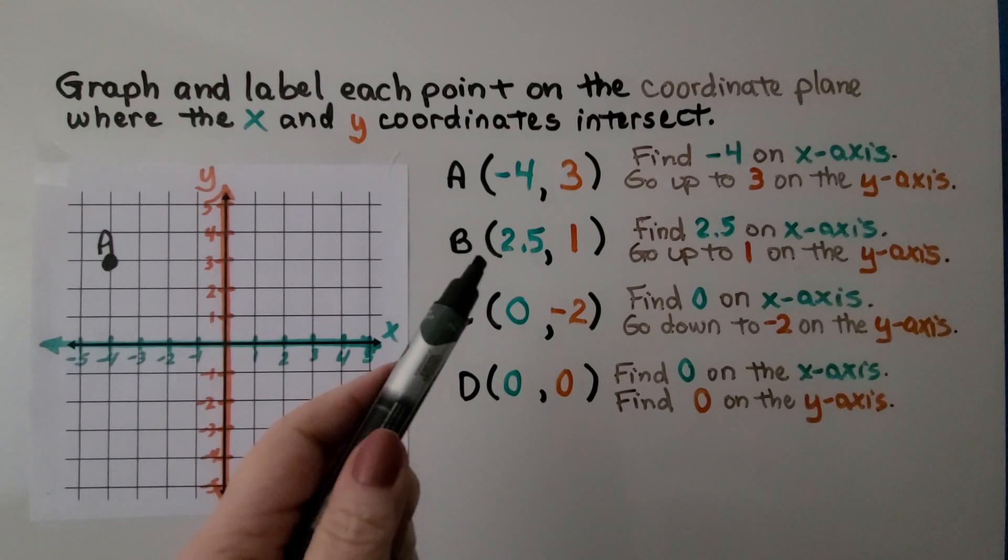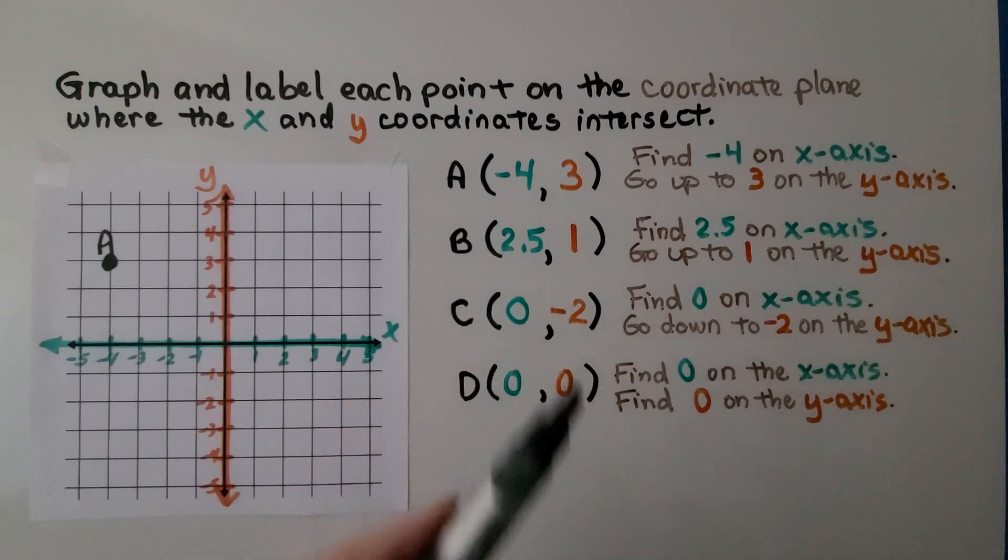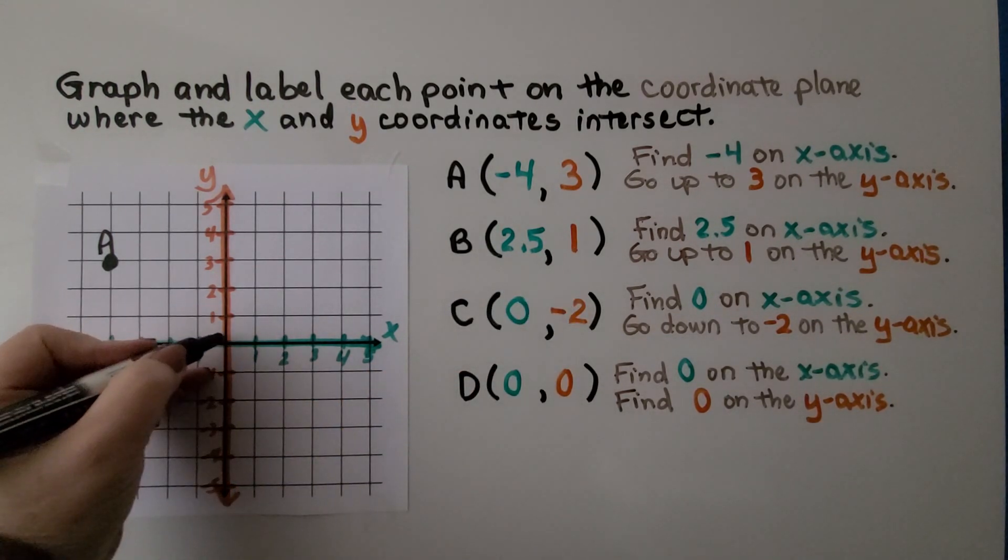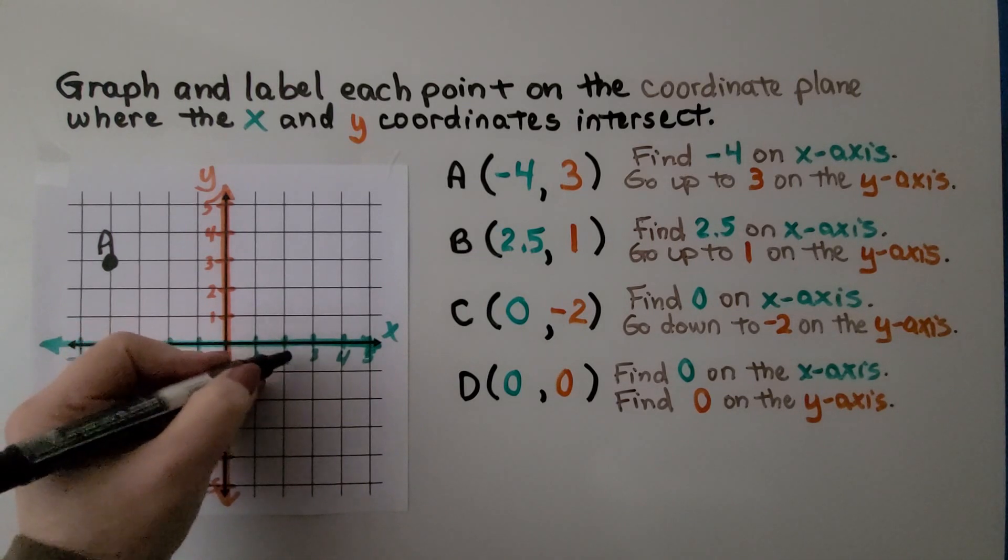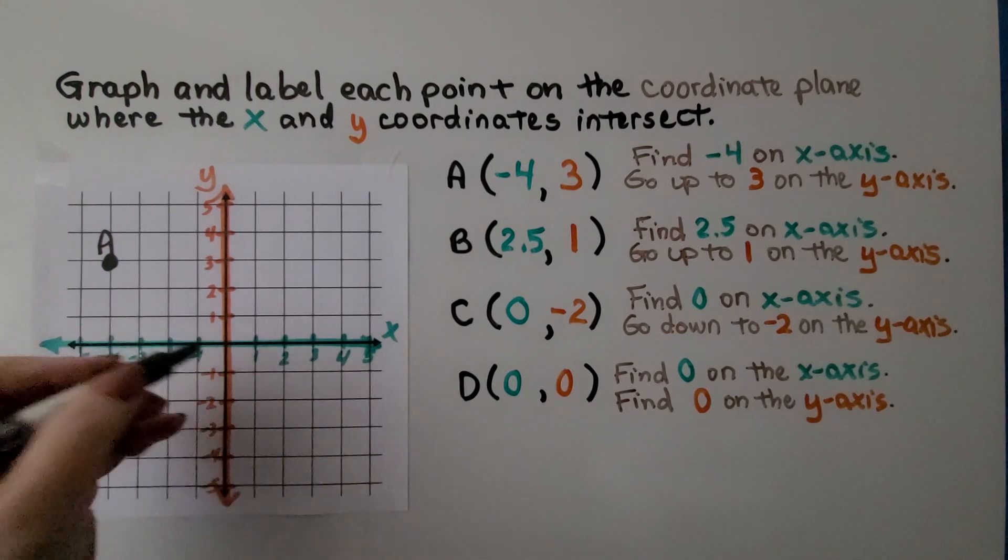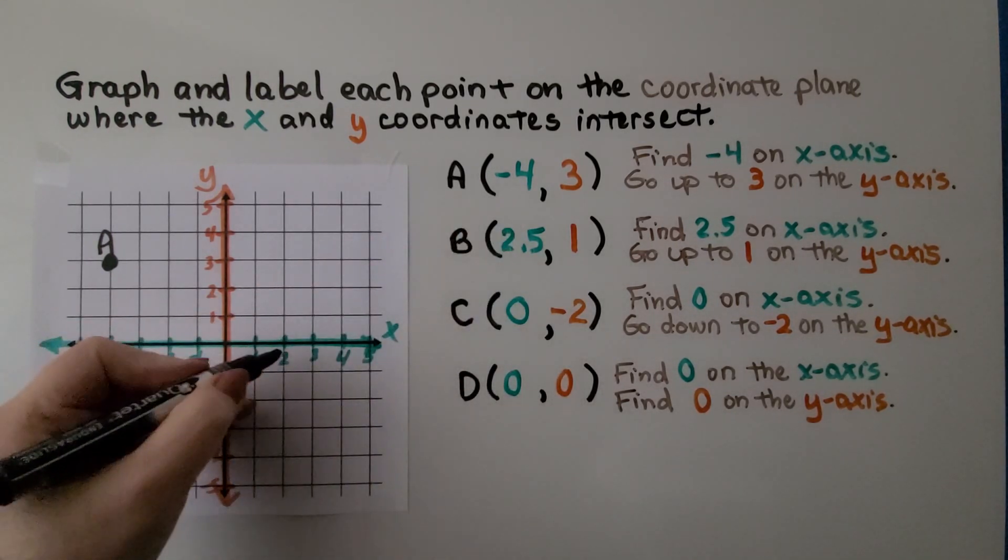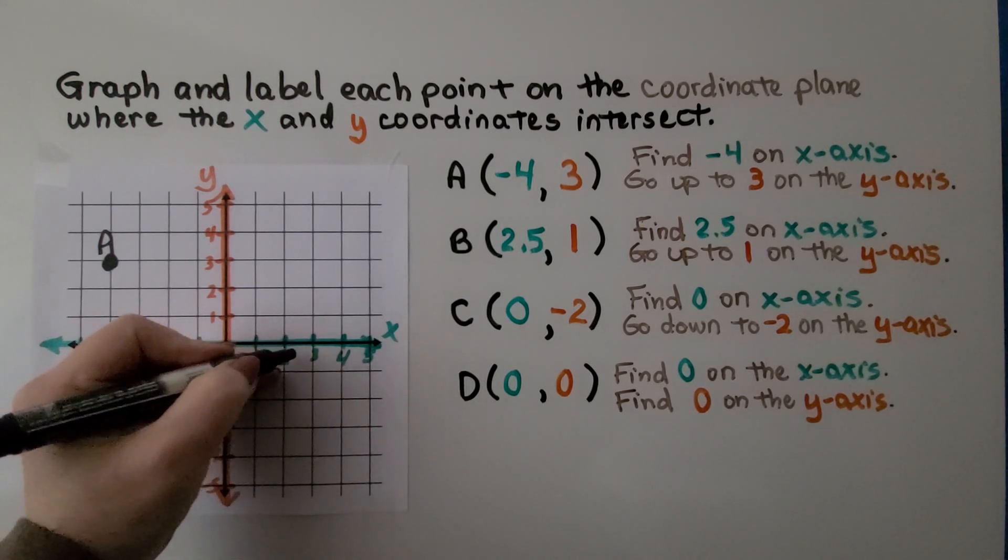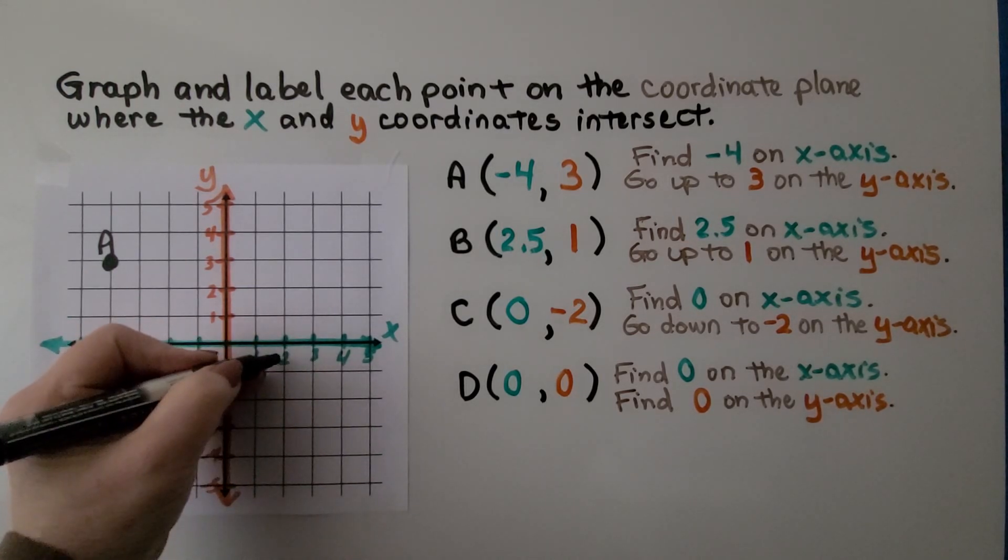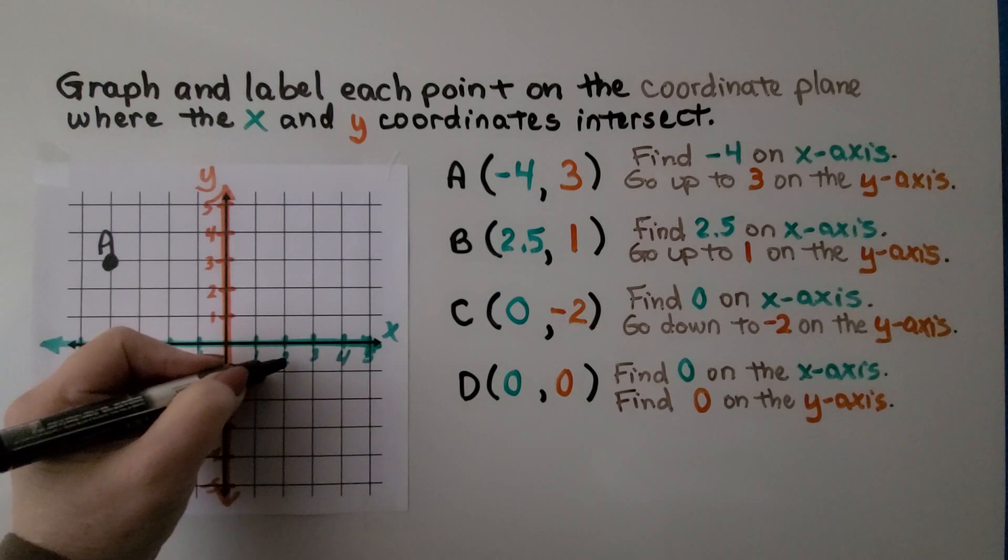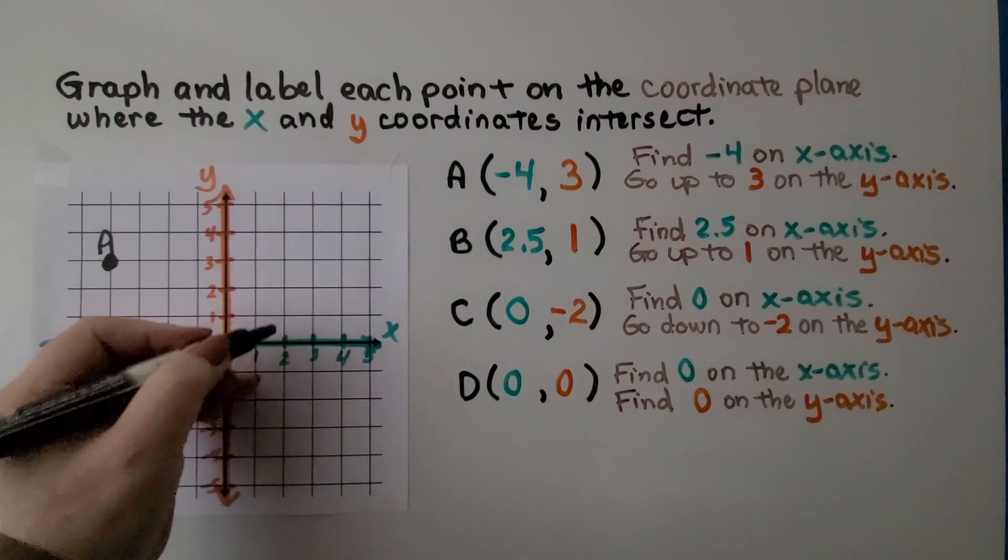For B, it says it's at two and five tenths and one. So here's zero. Here's one. Here's two. Well, then it goes to three. But we know two and five tenths is like two and a half. So it's in between two and three. And then for y, we need to go to one, which is right here.